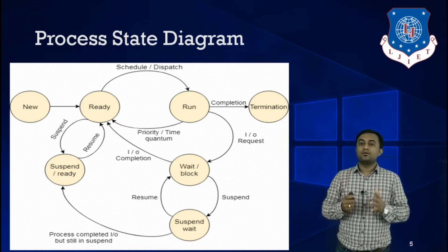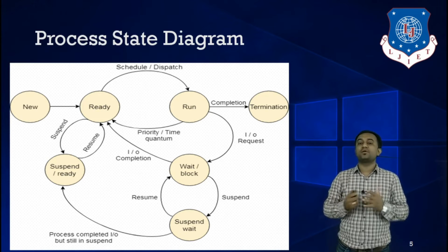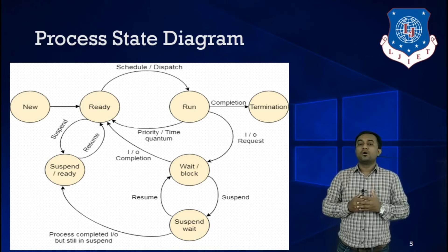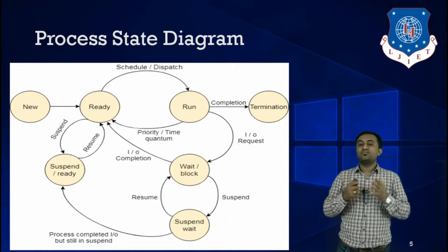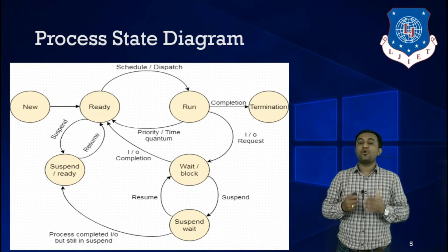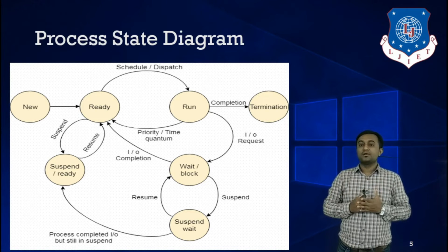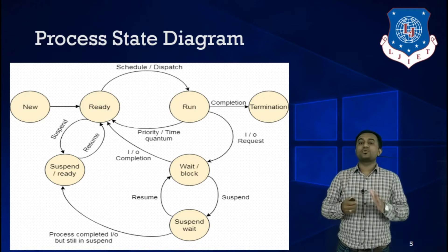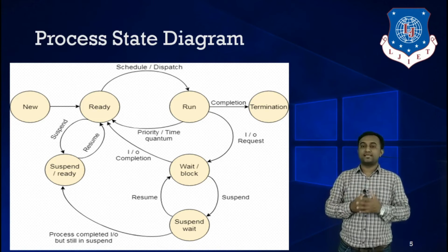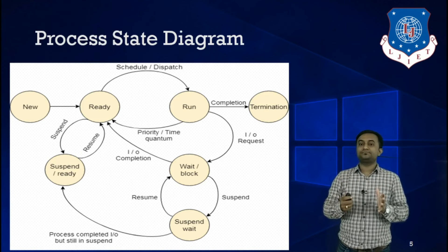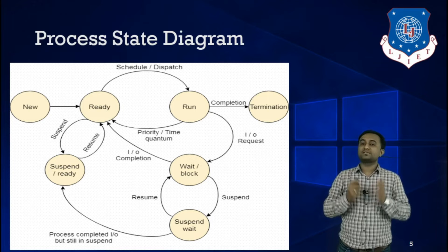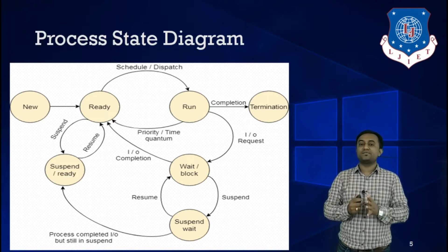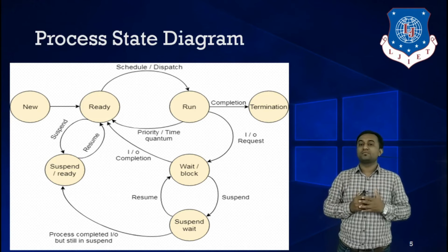The Ready state is located in main memory. Main memory has limited memory compared to secondary memory, so we can only accommodate some of the processes in the ready queue at a time. The ready queue contains processes that are ready for execution — they are waiting for CPU resources.